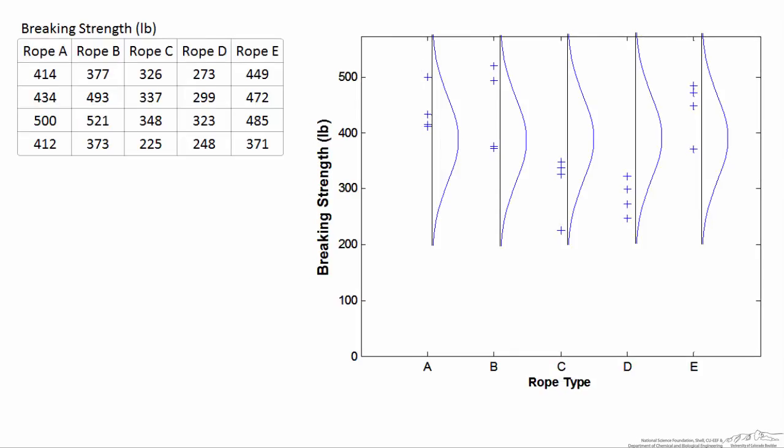When we run an analysis of variance, what we're trying to figure out is if the data points measured for each rope come from a normal population in which the mean values—mu A, mu B, for rope C, and D and E—whether or not they're equal.